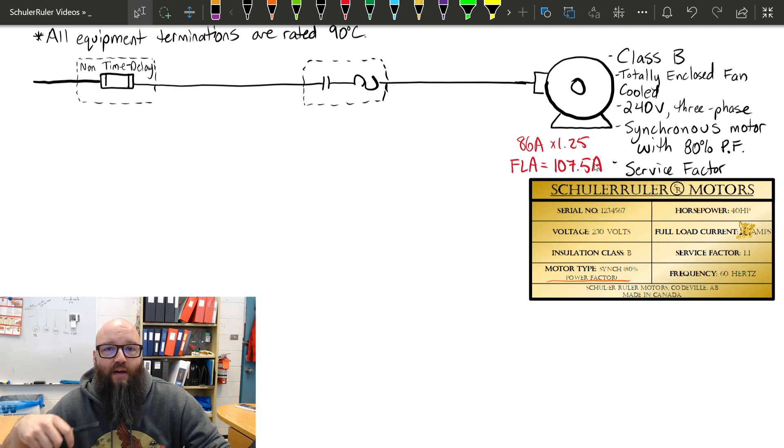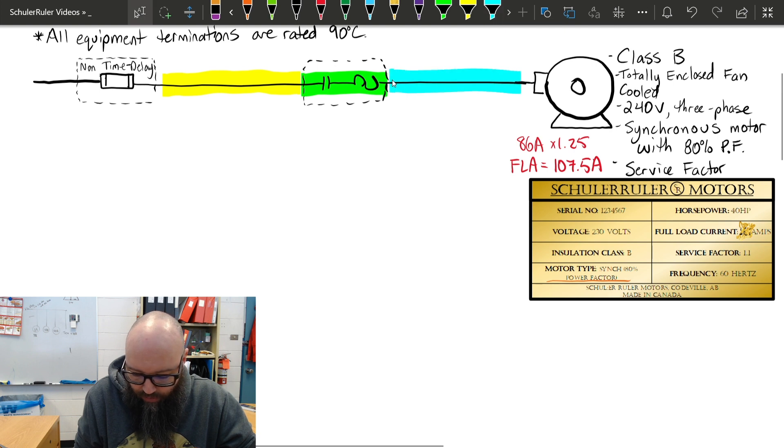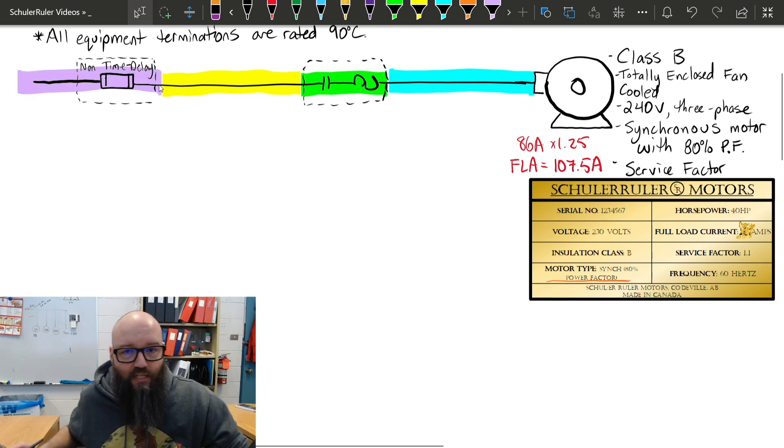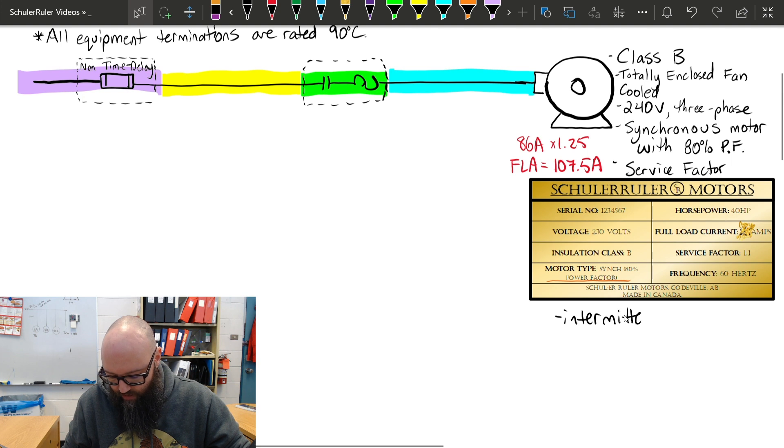We're going to use that for all of our different calculations: our overloads, our branch circuit conductors, our motor supply conductors, and eventually our overcurrent protection. So let's start off with our branch circuit conductors. I'm just going to highlight these individual sections so we have points of reference. For the duty cycle in this motor, we're going to use intermittent duty, operating for a five-minute time period.